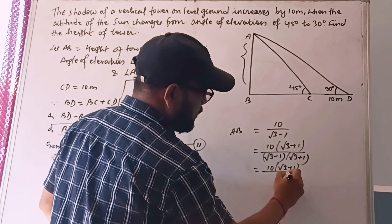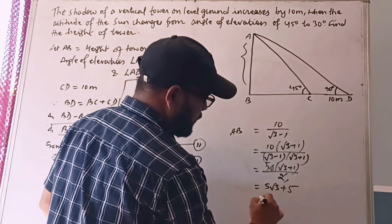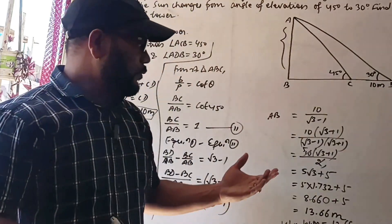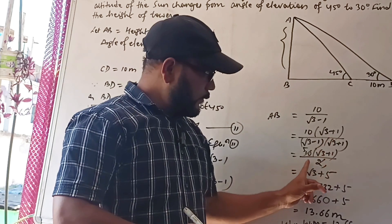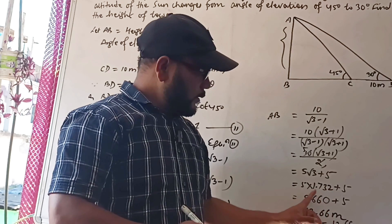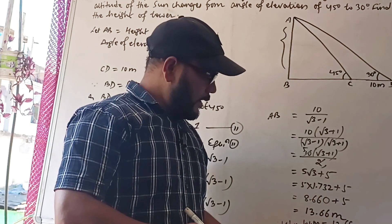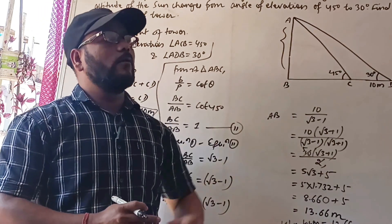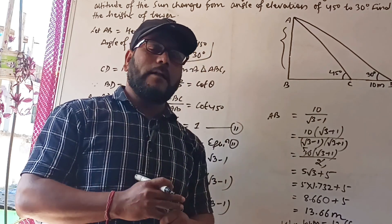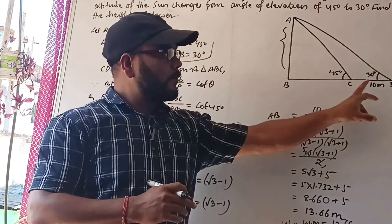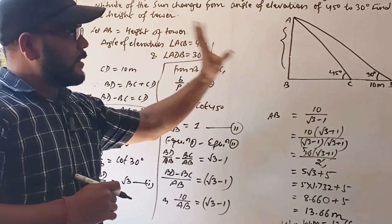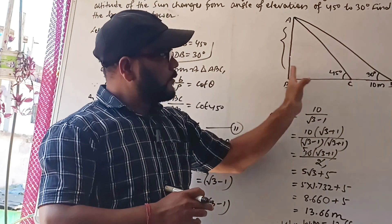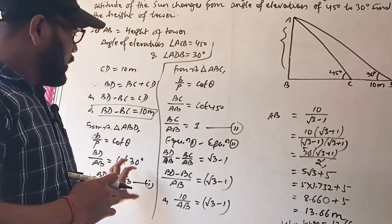This gives 5(√3 + 1) = 5√3 + 5. Using √3 = 1.732, the answer is 13.66 meters. The height of the tower is 13.66 meters. For this type of question with two angles and an increase or decrease in shadow length, consider the outer triangle first, then the inner triangle, and subtract the two equations.